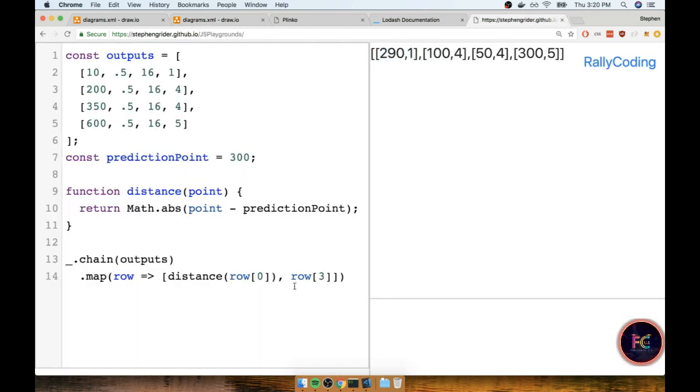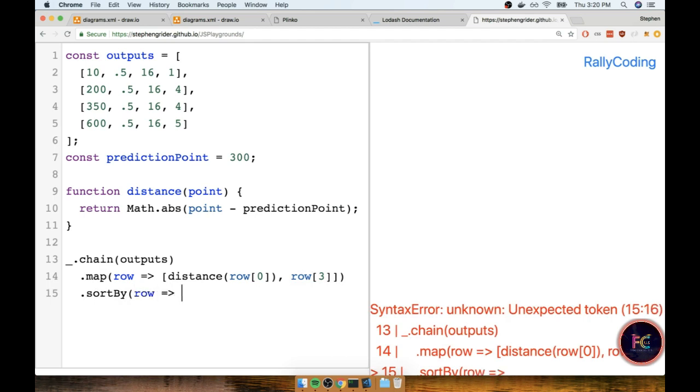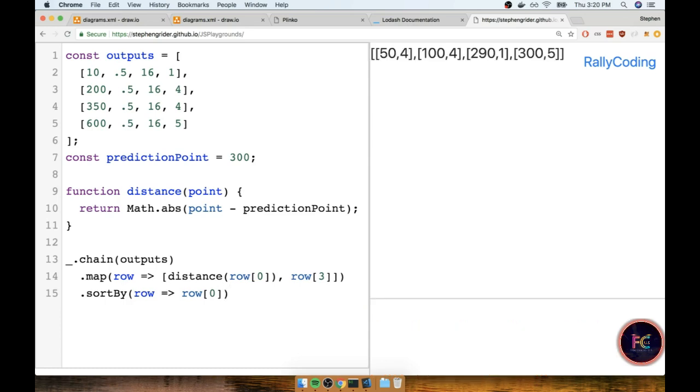Back in my code editor, underneath the map I'll chain on a sort by, and I'll say that the sorting criteria I want to use is the zero entry in my row array. Now I can see that everything is correctly sorted. I have 50, 100, 290, and 300.